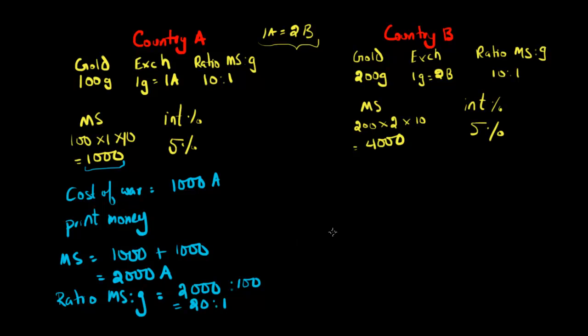The government just has been printing all this money and has been devaluing the value of country A dollars. Because while before, each country A dollar was 10% backed by real gold, because this ratio was 10 to 1, so that means that 10% of each country A dollar had some real gold sitting in a vault somewhere, now the ratio is 20 to 1, which implies that only 5% of each country A dollar is backed by some gold.